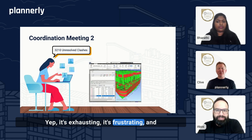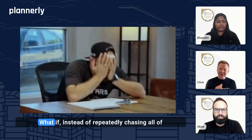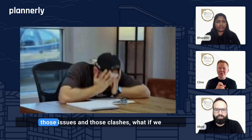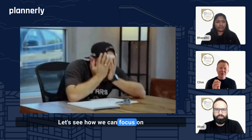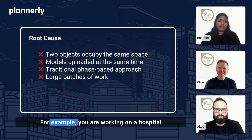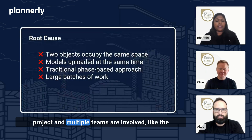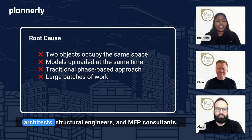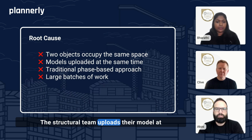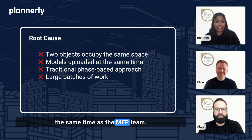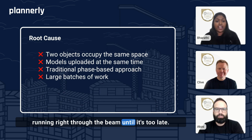It's exhausting, it's frustrating, and it doesn't solve the core problem. What if, instead of repeatedly chasing all of those clashes, we could focus on avoiding clashes altogether? For example, you are working on a hospital project and multiple teams are involved — the architects, structural engineers, and MEP consultants. When everyone is busy working in silos, focused on their own models, here is what happens: the structural team uploads their model at the same time as the MEP team, so no one realizes that the HVAC duct is running right through the beam until it's too late.